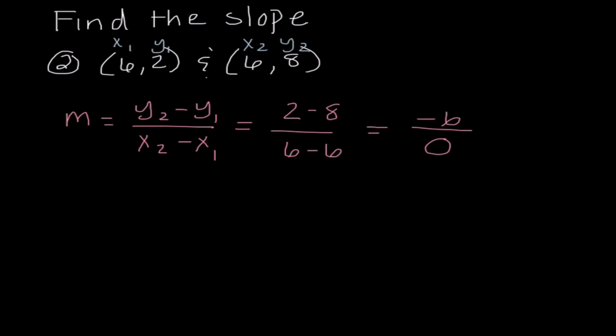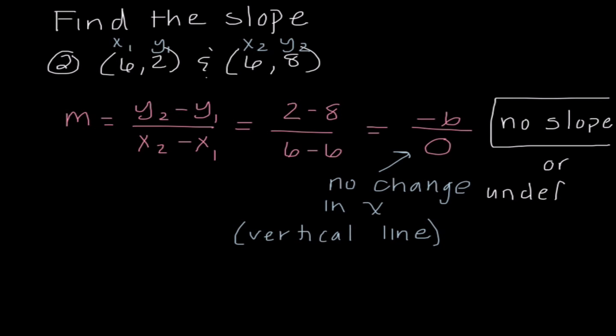Now, we have a problem here because we know we can never divide by 0. And what this really tells us is that there is no change in the x value, which means it's a vertical line. We write this in one of two ways. I could either say that there is no slope. So some books will write it like that. Or we could also say that the slope is undefined. Now, I normally use no slope in this class, but both answers are correct. We should know that they both represent the same thing.